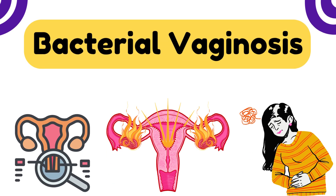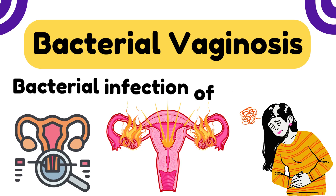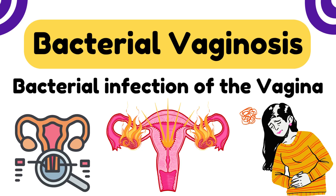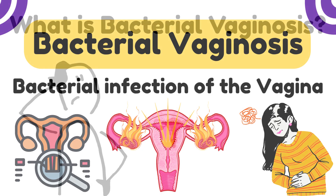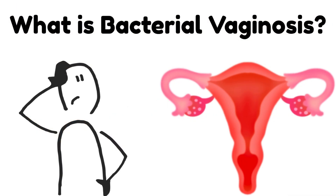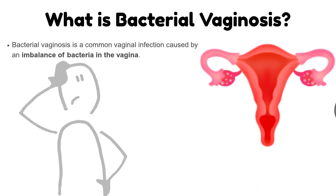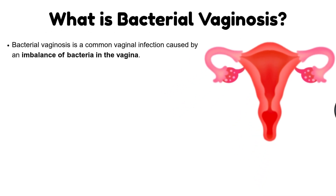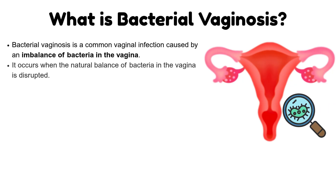Bacterial vaginosis — a bacterial infection of the vagina. What is bacterial vaginosis? Bacterial vaginosis is a common vaginal infection caused by an imbalance of bacteria in the vagina. It occurs when the natural balance of bacteria in the vagina is disrupted.